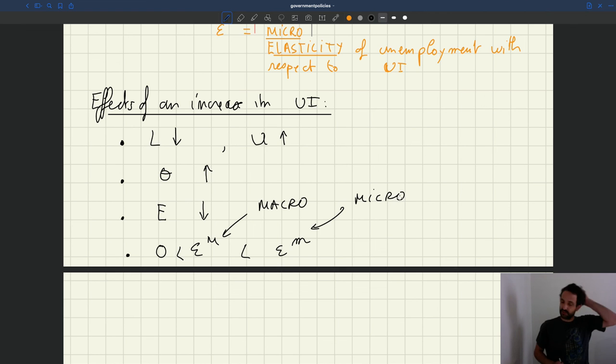So what that means in a sense is that if you change UI for just one worker in your labor market, their probability to find a job would drop more than if you change UI for all workers in the labor market. Okay? That's kind of the idea. And of course, the reason is that if everybody searches less, firms because they need workers, they're going to post more vacancies to compensate for that.